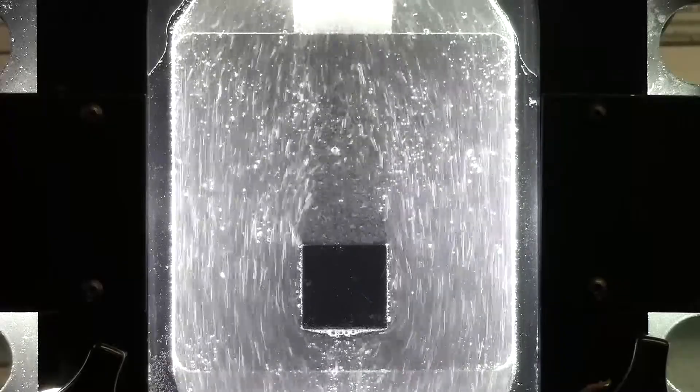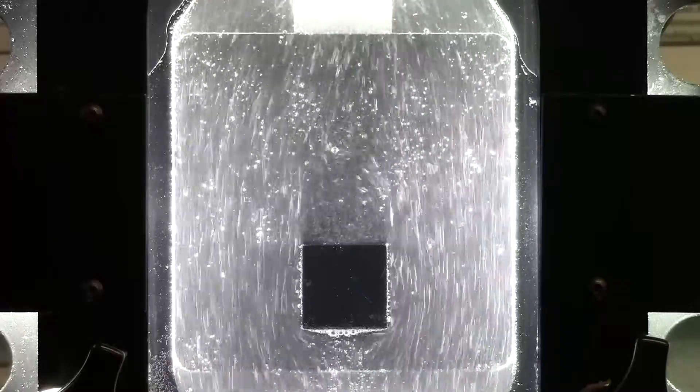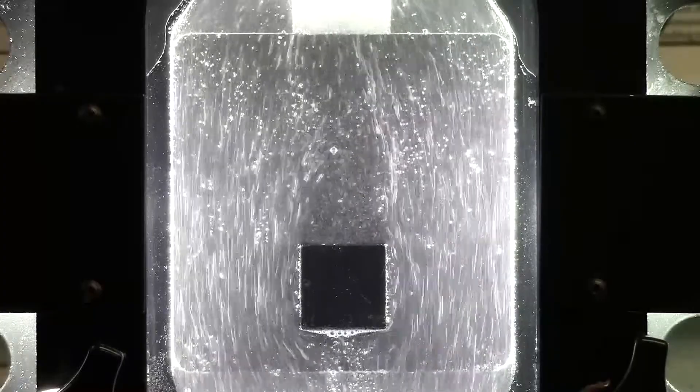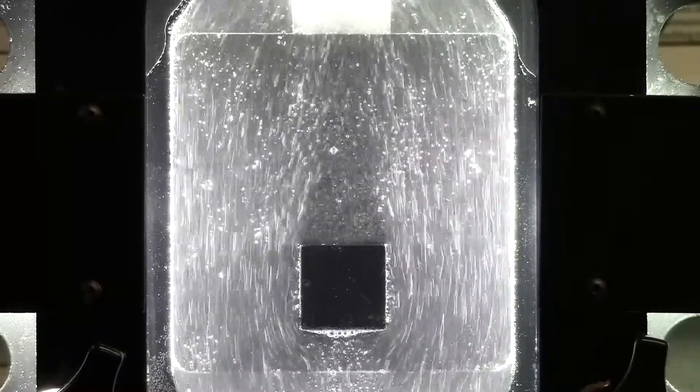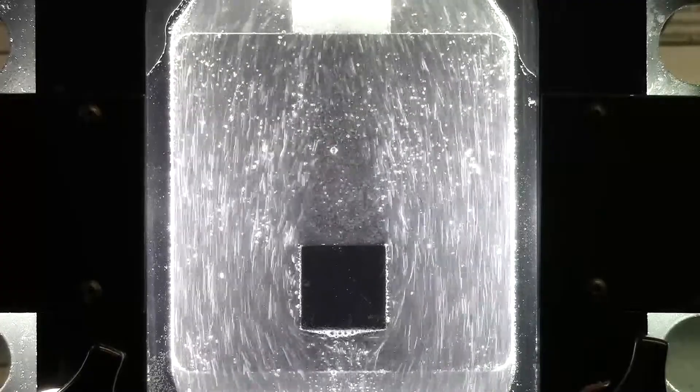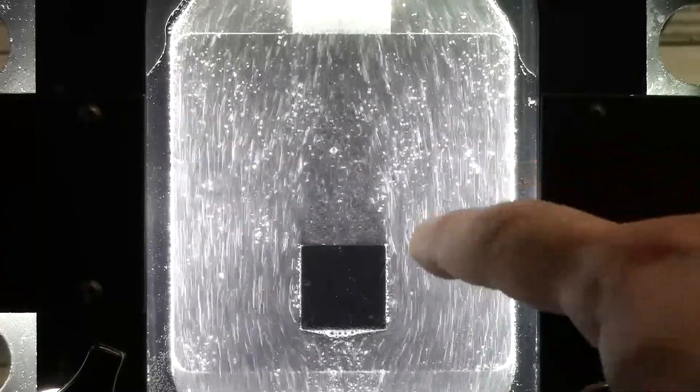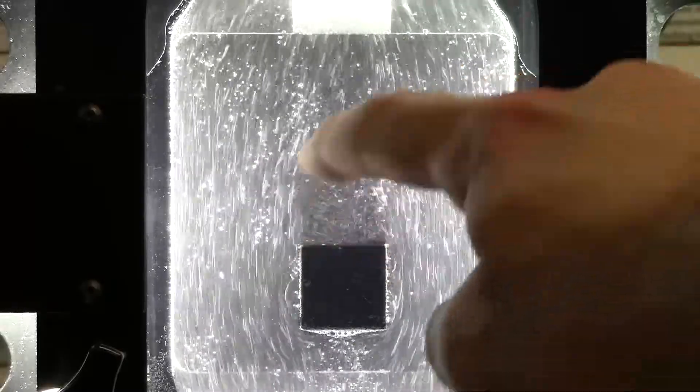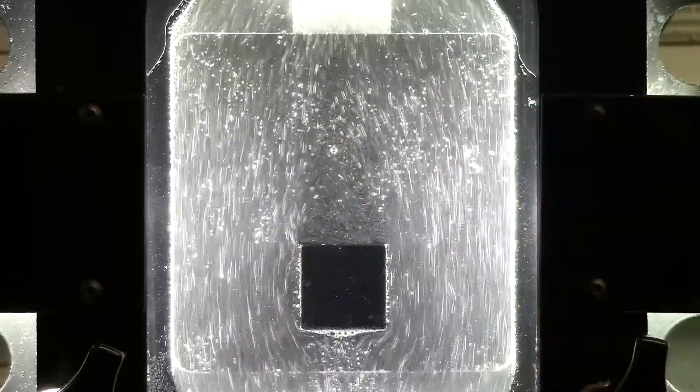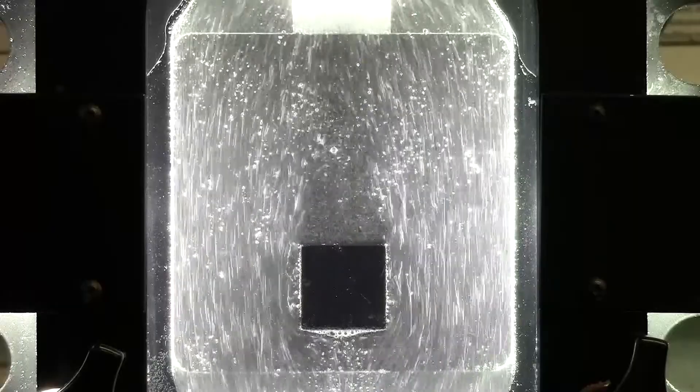We also have the wake region. The wake is just behind the square where water particles are kind of just floating around, not moving much. Right behind the square there is a region with low velocity and low pressure.